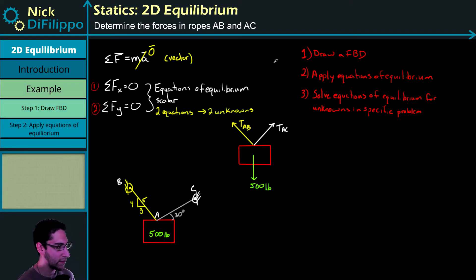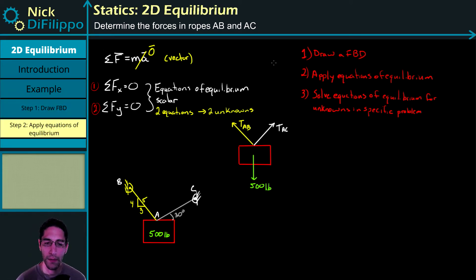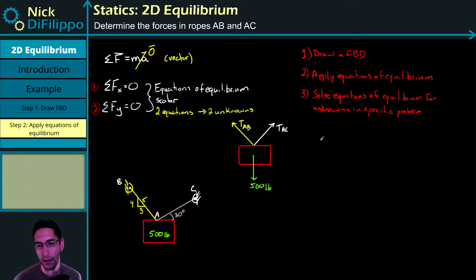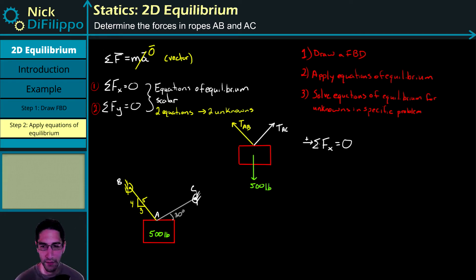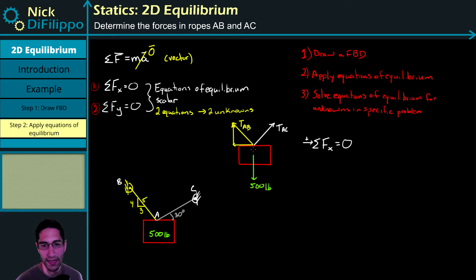Step two: apply the equations of equilibrium. Taking equation one — ΣFx = 0 — I'll say anything going to the right is positive. Looking at TAB, breaking that force into components, the x-component points to the left, so it's negative. The weight has no x-component, so we don't need to worry about it here.